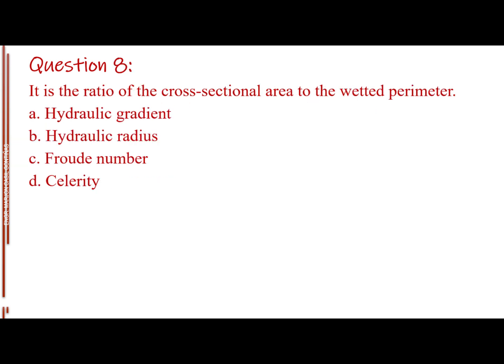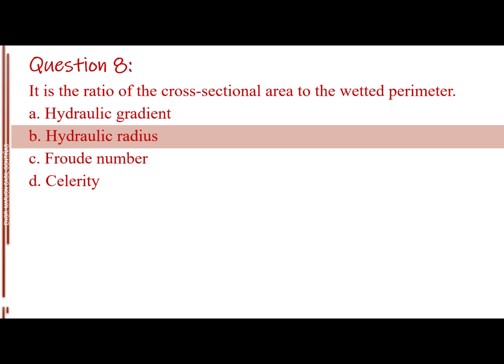Question number 8. It is the ratio of the cross-sectional area to the wetted perimeter. Letter A, hydraulic gradient. Letter B, hydraulic radius. Letter C, Froude number. Letter D, celerity. The answer is Letter B, hydraulic radius.